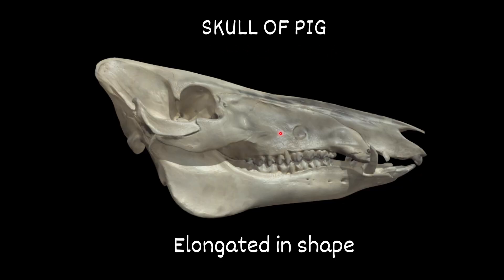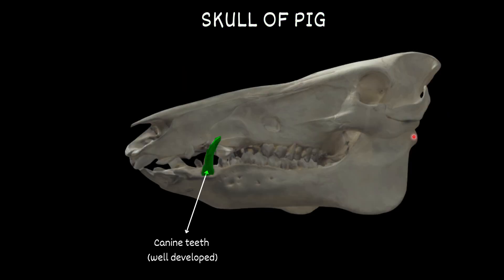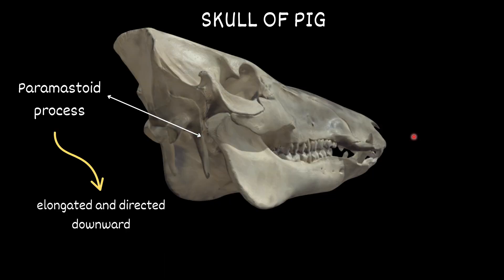Next, the skull of the pig. It is somewhat elongated with an incomplete orbital ring. Canine teeth are well developed. The paramastered process is elongated and directed downward.